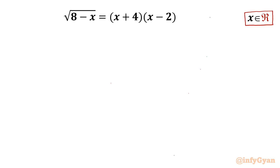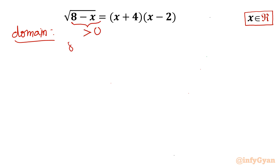Let us get started by writing the domain of the equation first. From the LHS, the radical should be positive always, so 8 minus x should be greater than 0, meaning x should be less than 8. This is one condition from the LHS.